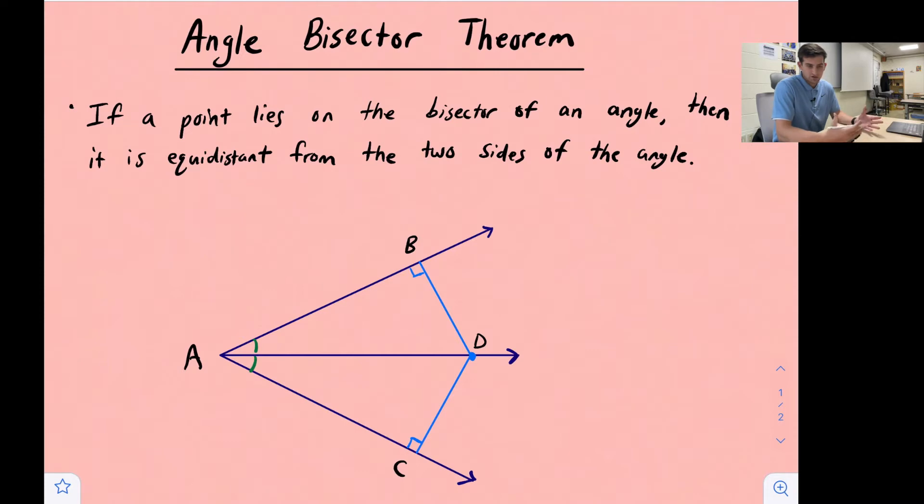We've talked about angle bisectors in geometry, we've done a construction on angle bisectors, I'll link that in the description below, and we've also talked about the distance from a point to a line being the perpendicular distance, so I'll link that video in the description below as well. We're going to use those two pieces of information to understand this theorem.